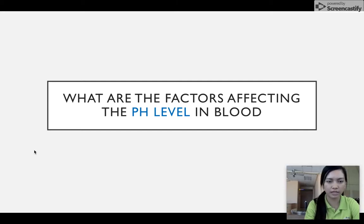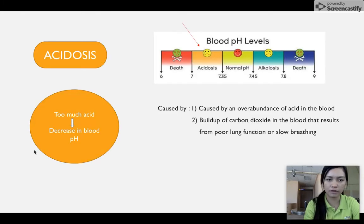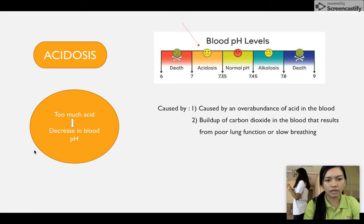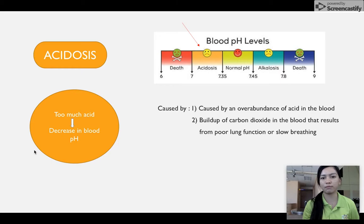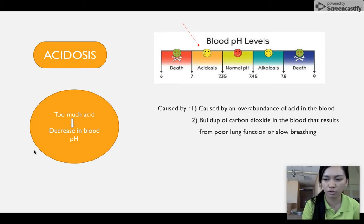The first question is: what are the factors affecting the pH level in blood? One of the factors is acidosis, which is when the blood has too much acid, resulting in a decrease in blood pH level. The pH level under acidosis is below 7.35. Acidosis is caused by an overabundance of acid in the blood or a buildup of carbon dioxide in the blood that results from poor lung function or slow urine output.